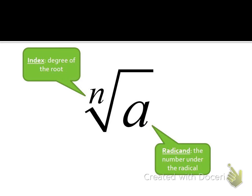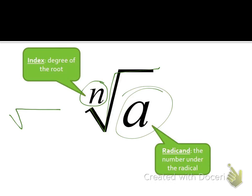We have different roots, and the way we write them is with a radical sign where we still have a radicand inside. The number in the corner of the radical is the index, and it's going to change. Square root is your default — if there's no number in the index spot, that's a square root. For a cube root, we put a 3 in the index spot. For a fourth root, a 4, and for a fifth root, a 5, and so on.